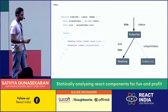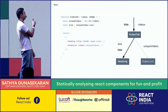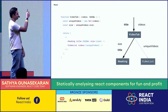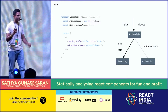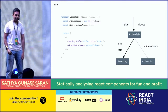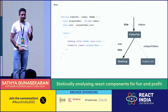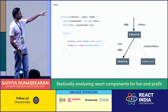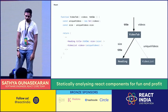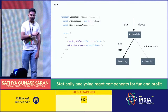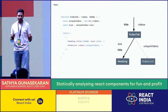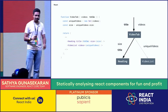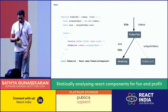But consider what happens when we render this video tab component again — the second time — but now we pass the same list of videos but a different title. In an ideal world, we would re-render just the heading component and not the video list component, because the video list component doesn't really depend on the title. But React's default move is to re-render everything, which is generally okay, but re-renders can start adding up in complex apps.